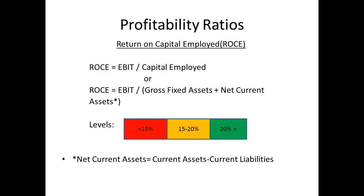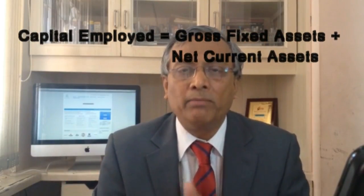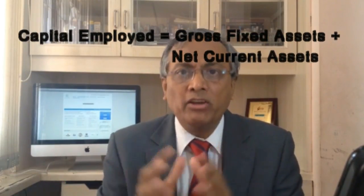Let's look at the most important ratio for a company, which is the profitability ratio. A company has been set up to make profits, and therefore the profitability ratio is extremely important. One very important profitability ratio is called the ROCE ratio. ROCE is EBIT divided by capital employed. Capital employed is the total amount of money that has been invested in the company.